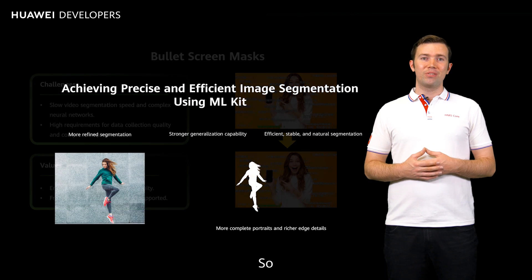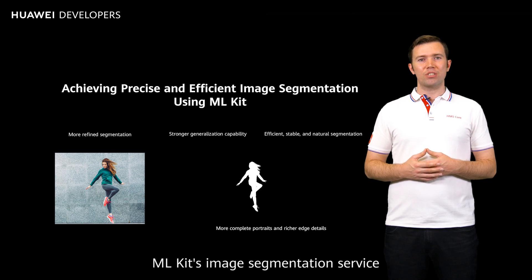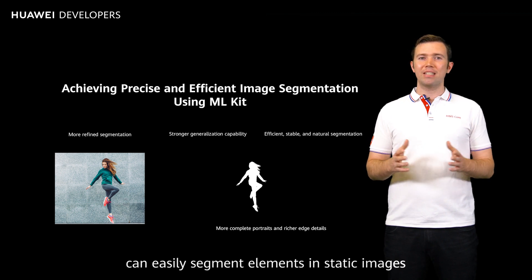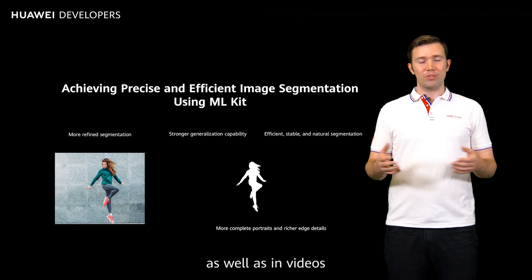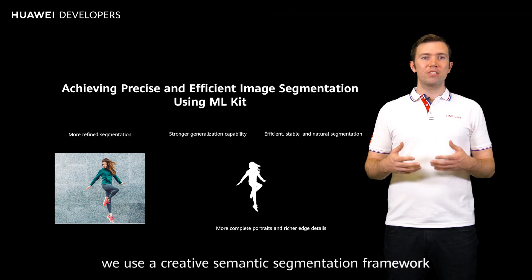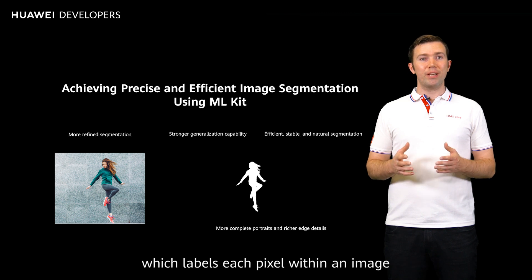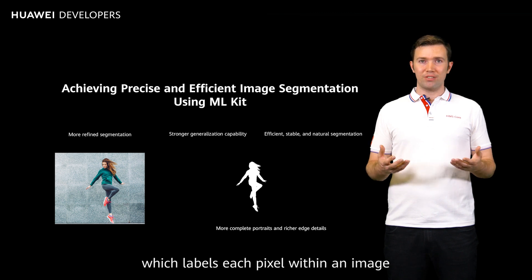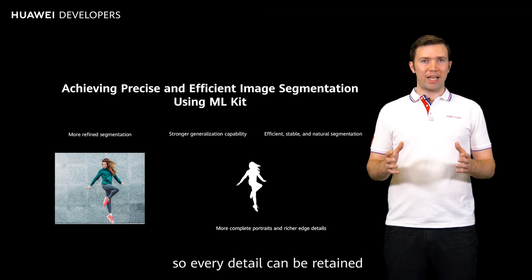As we've seen, ML Kit's image segmentation can easily segment elements in static images as well as in videos. For images, we use a creative semantic segmentation framework which labels each pixel within an image, so every detail can be retained.